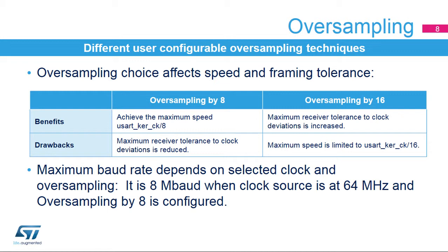The USART receiver implements different user-configurable oversampling techniques for data recovery by discriminating between valid incoming data and noise. This allows a trade-off between the maximum communication speed and noise clock inaccuracy immunity. Select oversampling by 8 to achieve higher speed up to USART KERCK-PRES divided by 8. Select oversampling by 16 to increase the tolerance of the receiver to clock deviations, where the maximum speed is limited to USART KERCK-PRES divided by 16. The maximum baud rate that can be reached is 12.5 megabaud when the clock source is at 100 MHz and oversampling by 8 is configured.